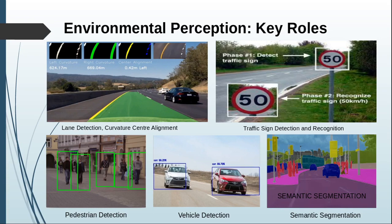Next we have traffic sign detection and recognition, which is also quite important. In traffic sign detection there are actually two phases: we need to detect if there is a traffic sign in front of us, and along with that we also need to recognize what the traffic sign says. For example, a traffic sign saying 50 kilometers per hour — which we usually see at the start or end of a city — means the car should know it should not exceed beyond 50 kilometers per hour until we see the end of that road.